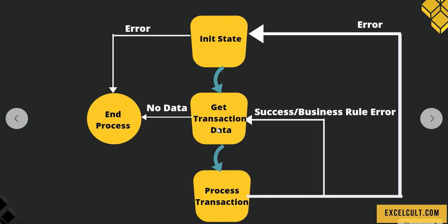Here, GetTransactionData acts as a gateway which will allow our N number of items available in the queue to get processed. This will allow the transactions to pass through it and then send them to the ProcessTransaction state. If there are no transactions to process, then it will directly lead us to End Process and stop there.